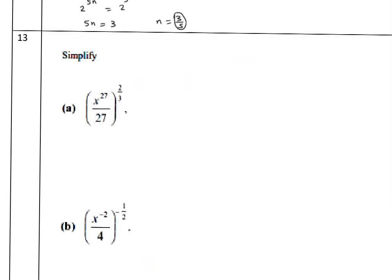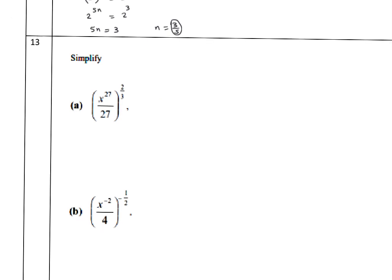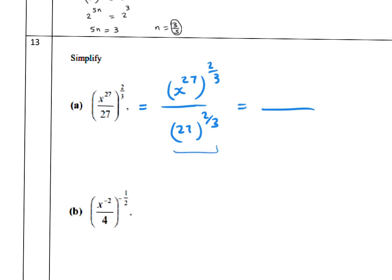Problem 13: simplify (x^27)^(2/3) over 27^(2/3). Distribute the power. For the numerator: multiply the powers — 27 times 2/3 equals 18, so x^18. For the denominator: the cube root of 27 squared equals 3^2 = 9. The answer is x^18 over 9.